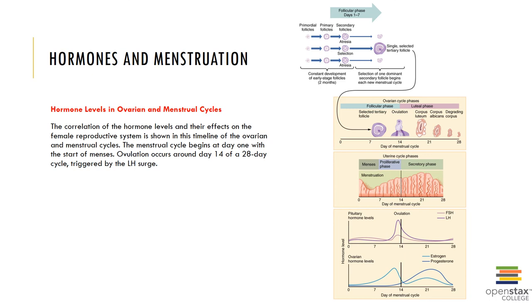The pre-ovulatory phase, also called the proliferative phase, is approximately day six through day 14. The basal zone and the deepest uterine glands survive menses; the epithelial cells of the uterine glands then multiply and spread across the endometrial surface. Spiral arteries begin to develop and penetrate through the new functional zone of the endometrium. Restoration of the functional zone is stimulated and sustained by estrogens secreted by the ovarian follicles.